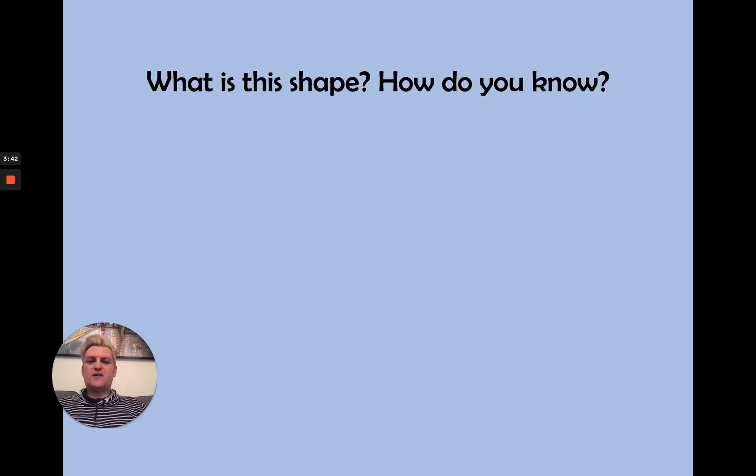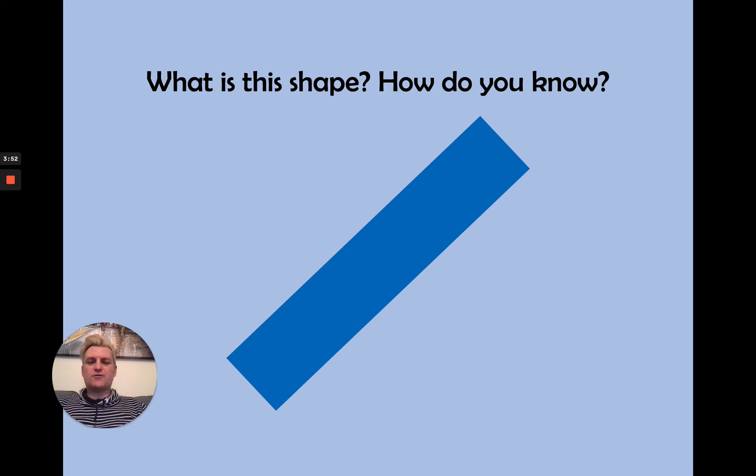It is an oblong. Or you might say a rectangle. Let's have a look. There it is. I've turned it a little bit on its side there, haven't I? So, it's going diagonal. But that is still a rectangle or an oblong.